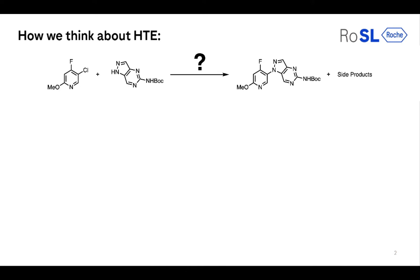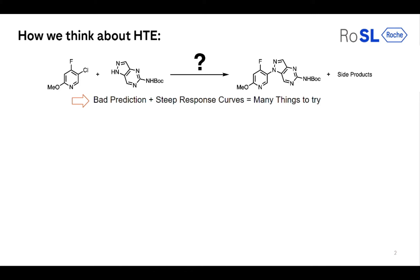Prediction here can be very difficult for your specific substrate. Moreover, these kinds of reactions are very sensitive to the smallest changes in parameters — the slightest change in the base or ligands can make a huge impact. So whenever you have a reaction where prediction is poor and there is a very deep response curve, you end up trying many, many things. There is no way around it.